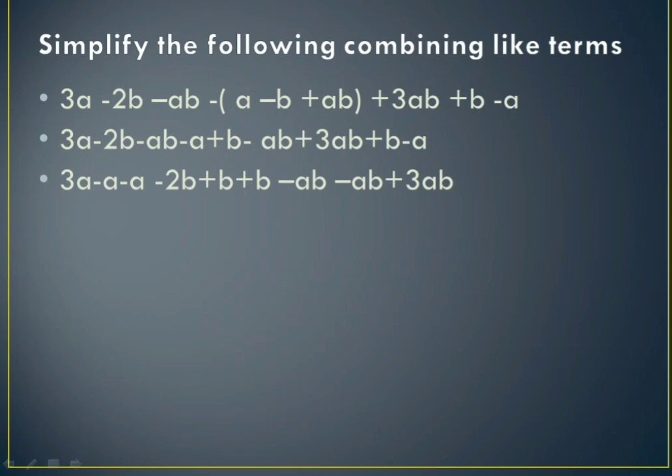Now 3 minus 1 minus 1 equals 1, so 1a is just a. For the b terms: minus 2b plus 2b cancels out, so nothing remains. For the ab terms: minus 1 minus 1 plus 3 equals 1, so 1ab is just ab. Therefore, a plus ab is our answer.